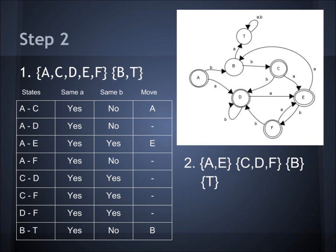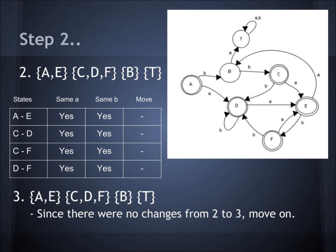Then you move to the second set and test B and T. Both B and T go to the same place on A, but not on B, so B gets moved out of the set. Then you do this test again — and for this iteration, they all pass since there were no changes from the previous one, so you can move on.